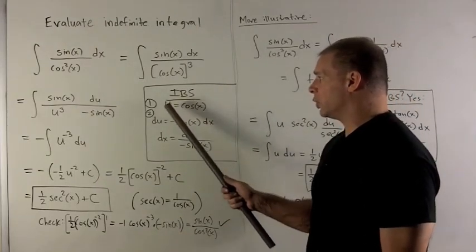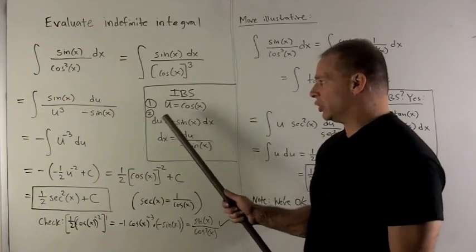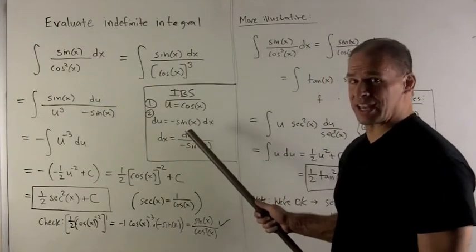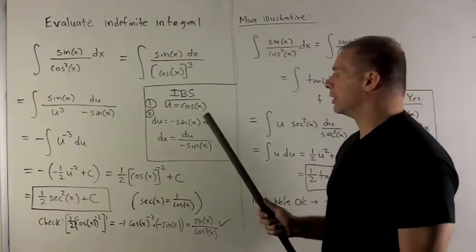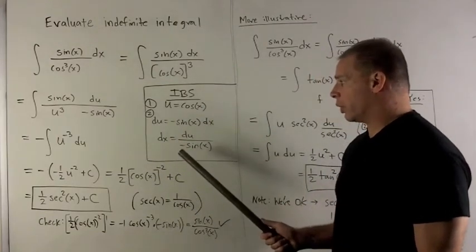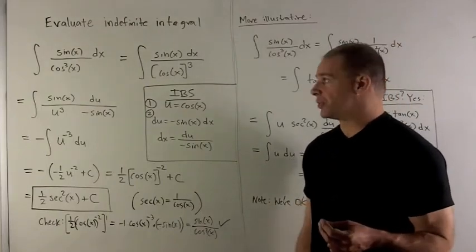Next, I'm going to take the derivative of u with respect to x, and that's going to give me du equals the derivative times dx, or du equals minus sine x dx. I isolate dx, which gives me du over minus sine x. Now we substitute.